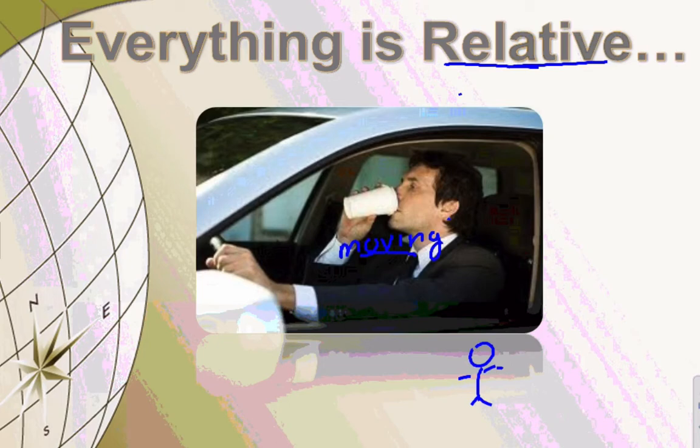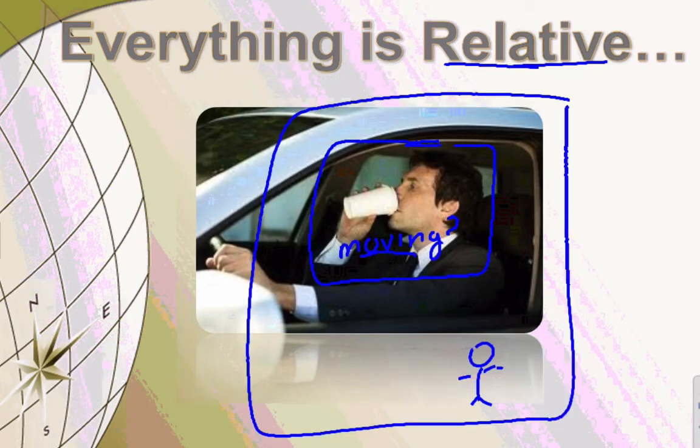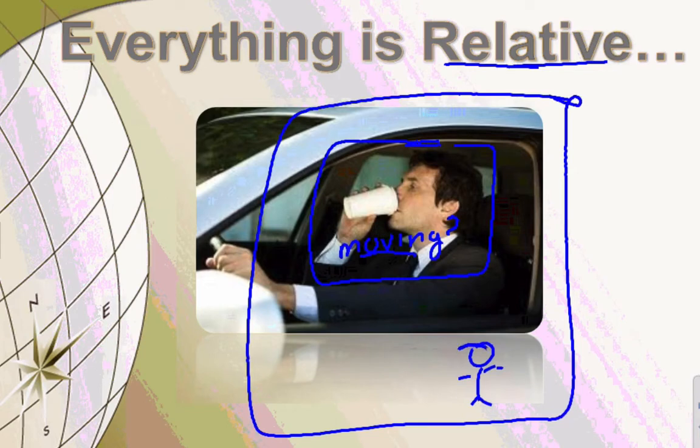For the person on the side of the road, if it were not moving, then the person on the side of the road could drink it. So the only way to answer the question of whether or not the cup of coffee is moving is to first say, with respect to what frame of reference are we trying to decide, is the cup of coffee moving or not? Are we talking about a reference frame just inside the car? Well, if this is my reference frame, clearly the cup is not moving.